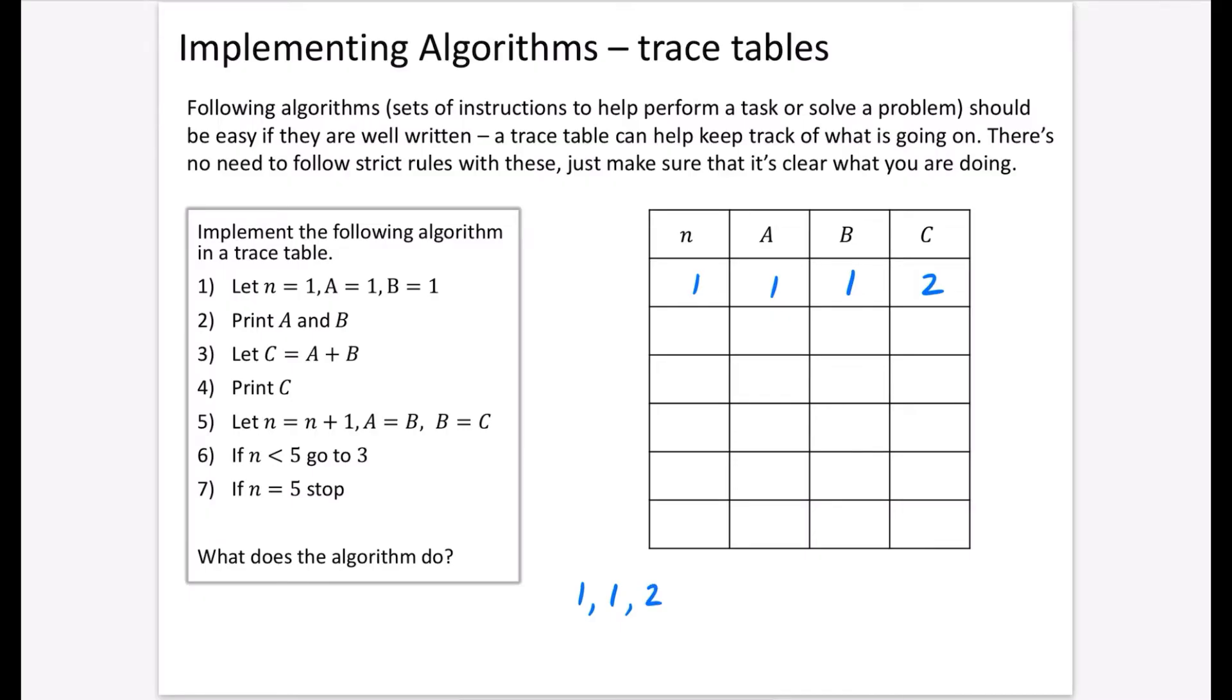Let n equal n plus 1. So n was 1, now it becomes 2. Let a equal b, so a is now 1. Let b equal c, so b is 2. If n is less than 5, go to step 3. Well, n is less than 5, so we go back. Let c equal a plus b, so c equals 1 plus 2, which is 3. Print c. Now n increases by 1, so it becomes 3. A becomes b, and b becomes c.